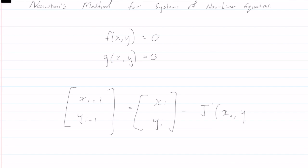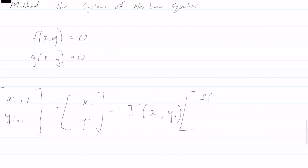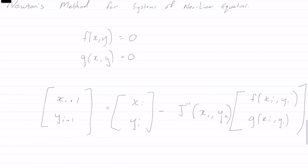multiplied by f of x_i, y_i, g of x_i, y_i. Again, it is an iterative method. You have to do that more than once.